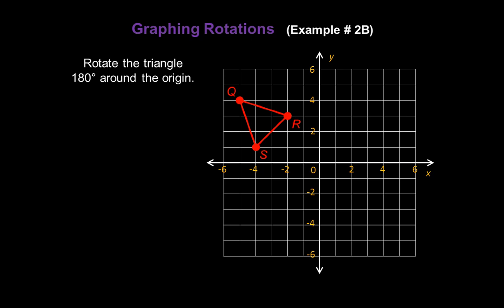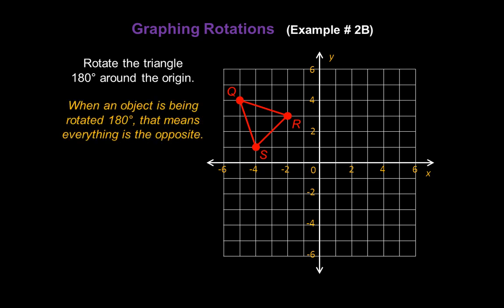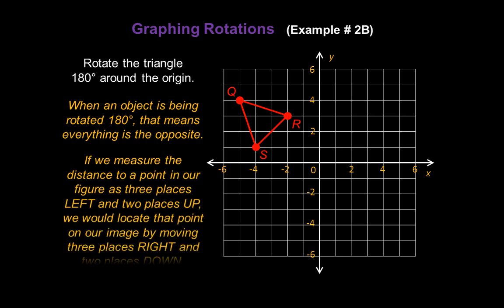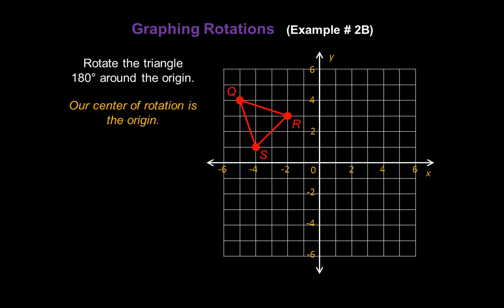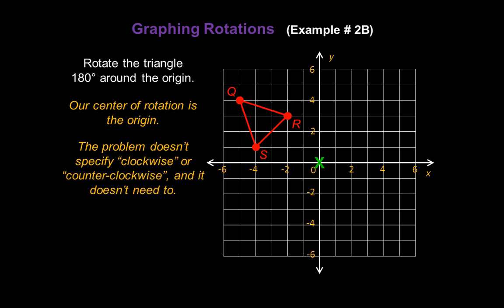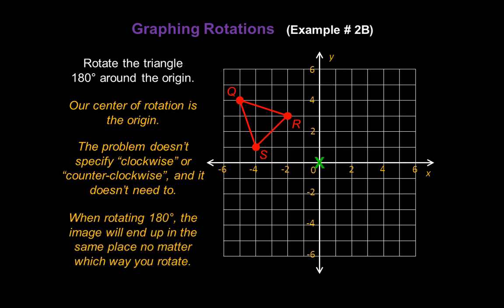Now let's graph another rotation. Let's rotate this triangle 180 degrees around the origin. When an object is being rotated 180 degrees, that means everything is the opposite. If we measure the distance to a point in our figure as three places left and two places up, we would locate that point on our image by moving three places right and two places down — all directions are exactly opposite. Our center of rotation for this example is the origin. The problem doesn't specify clockwise or counterclockwise, and it doesn't need to — when rotating 180 degrees, the image will end up in the same place no matter which way you rotate.